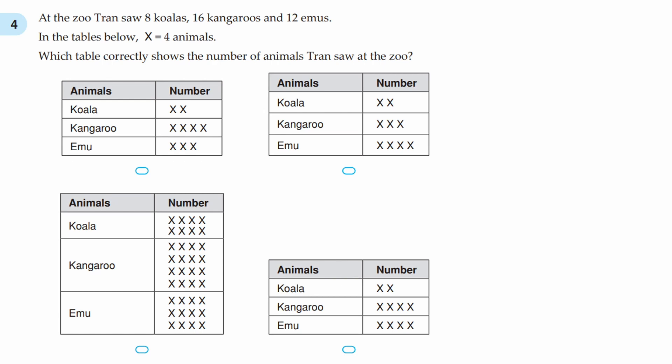Question number 4. At the zoo, Tran saw 8 koalas, 16 kangaroos, and 12 emus. In the tables below, X equals 4 animals. Which table correctly shows the number of animals Tran saw at the zoo? This is really important, X is 4 animals,